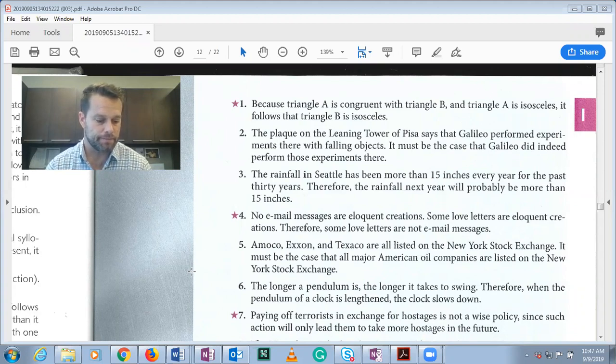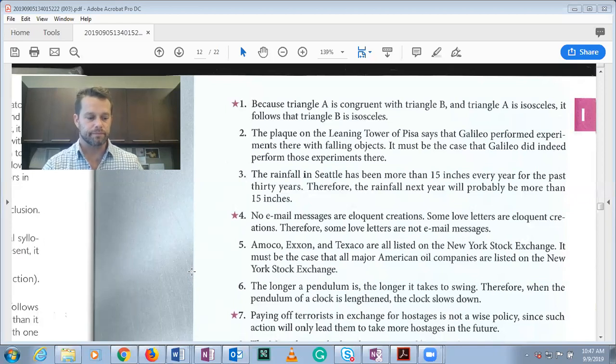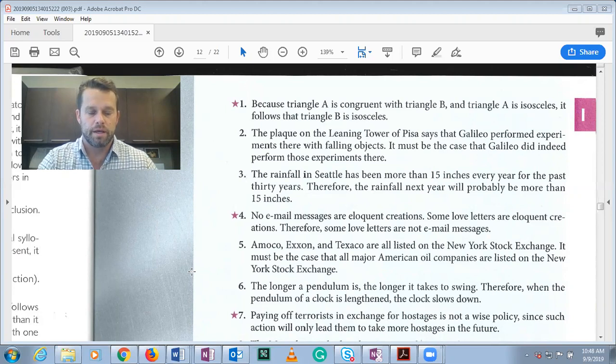Number one: Because triangle A is congruent with triangle B and triangle A is isosceles, it follows that triangle B is isosceles. This is a mathematical deductive argument and it attempts to prove its conclusion 100% necessarily.